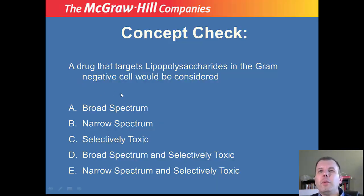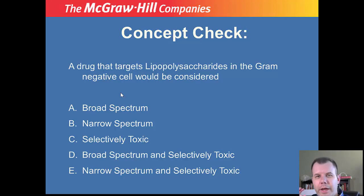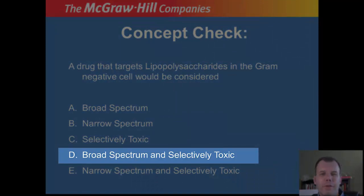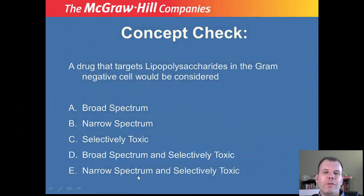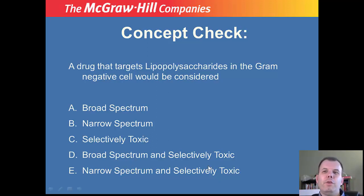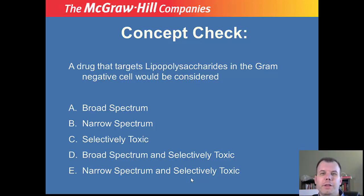Let's answer this question: a drug that targets lipopolysaccharides in the gram-negative cell would be considered what - broad spectrum, narrow spectrum, selectively toxic, broad spectrum and selectively toxic, or narrow spectrum and selectively toxic? Selectively toxic means it's only found on microbes, not on us. Broad is lots of bacteria versus narrow, which would be very few. The answer is D - broad spectrum and selectively toxic - because all gram-negatives have LPS, so targeting it is broad, and it's selectively toxic since we don't have it.